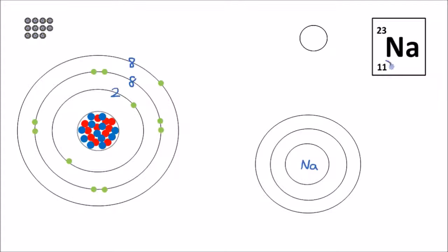Sodium has 11 electrons in total. The first shell can hold two — I'm going to represent the electrons with a cross; you can draw a small circle, called a dot, or you can use a cross. So the first shell can hold a maximum of two electrons. We move on to the second shell, which can hold a maximum of eight. So that's two plus eight, making 10 electrons drawn so far. We need one more to make 11, so the outer shell will only have one electron — it's not going to be full. That makes 11 electrons for sodium.